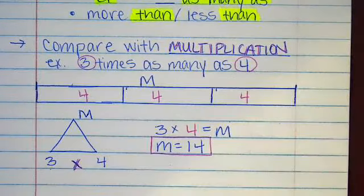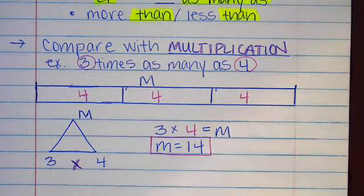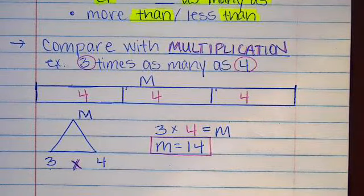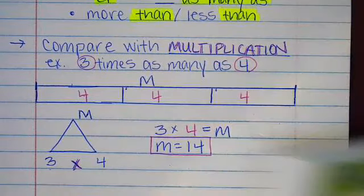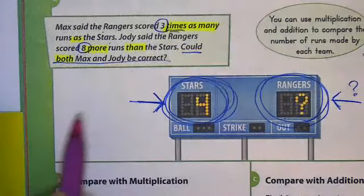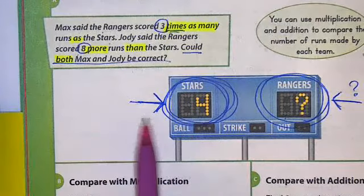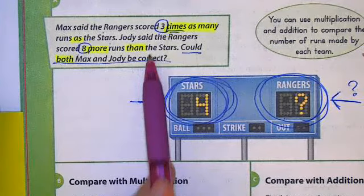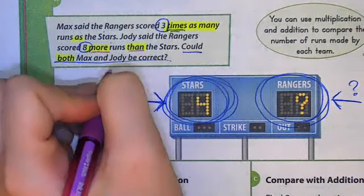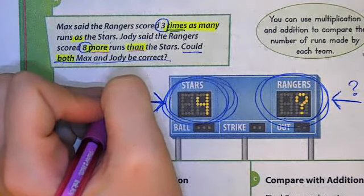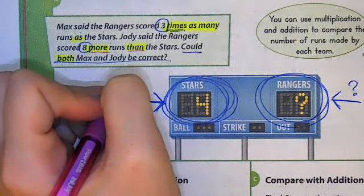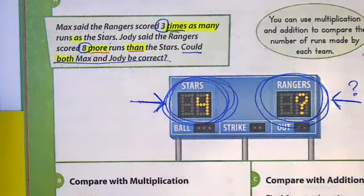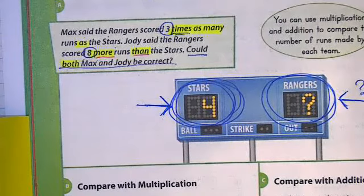So now we're going to be seeing what the other kid, Jody said that they scored. And she said that the Stars ran eight more than. So now we have to do her comparison using addition, because we're seeing the words more than and not times. Because if you say that Miss Leon is shorter than Mr. Cohee, then you're going to have to add or subtract some inches. So when you're saying more than or less than, that's an addition-subtraction situation. So now let's go ahead and show that using a bar diagram.